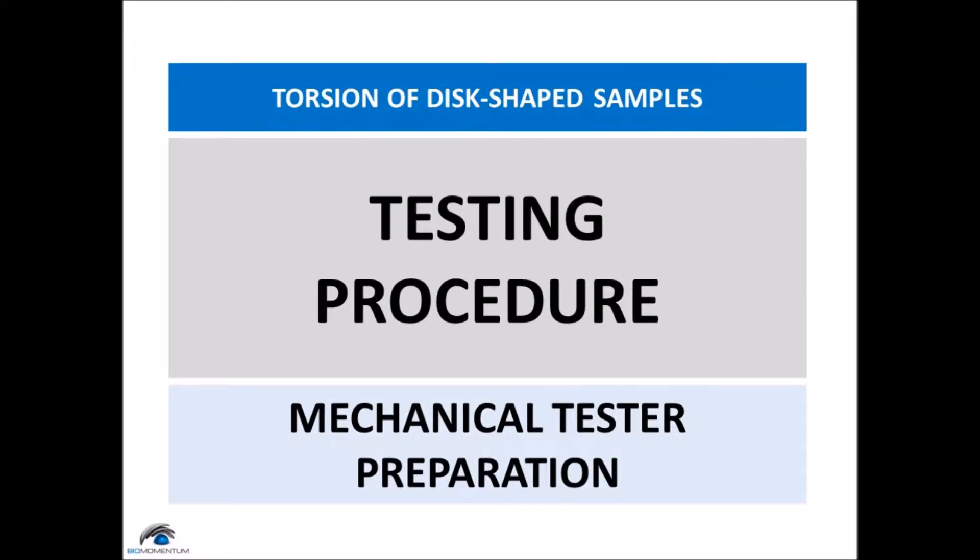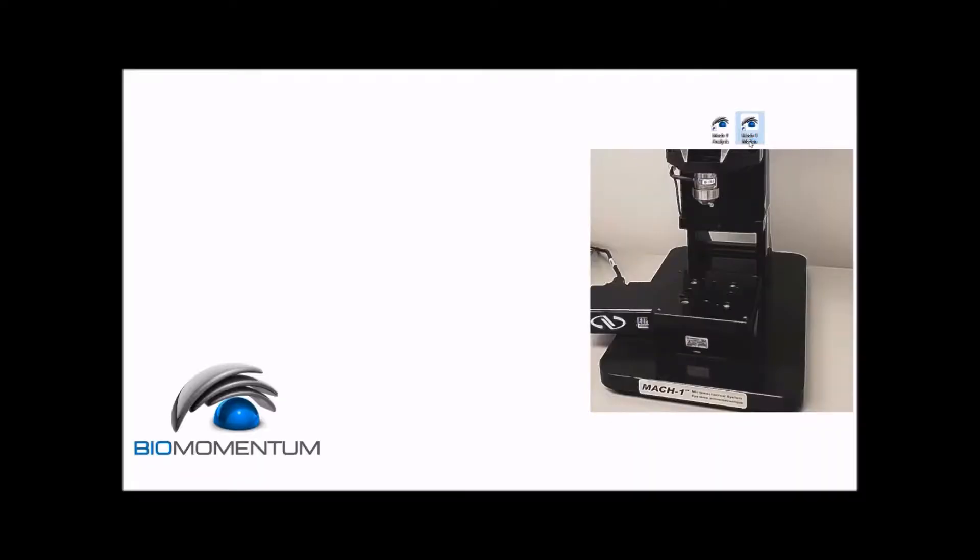And now, the testing procedure for the mechanical tester. Open Maquan Motion software and select the proper configuration. In this case, we have a vertical stage and a rotational stage, which corresponds to the model V500CT.